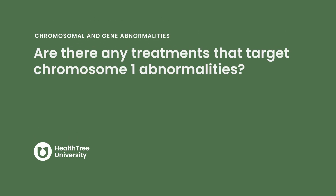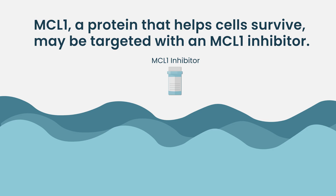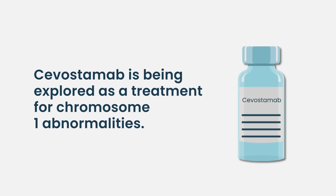Are there any treatments that target chromosome 1 abnormalities? There's some conjecture around a protein called MCL1, and some thought that MCL1 inhibitors might be of interest. Also, Cevostamab — an FCRH5 target — is also expressed on chromosome 1. But we don't yet know whether certain drugs work better or not in that setting.